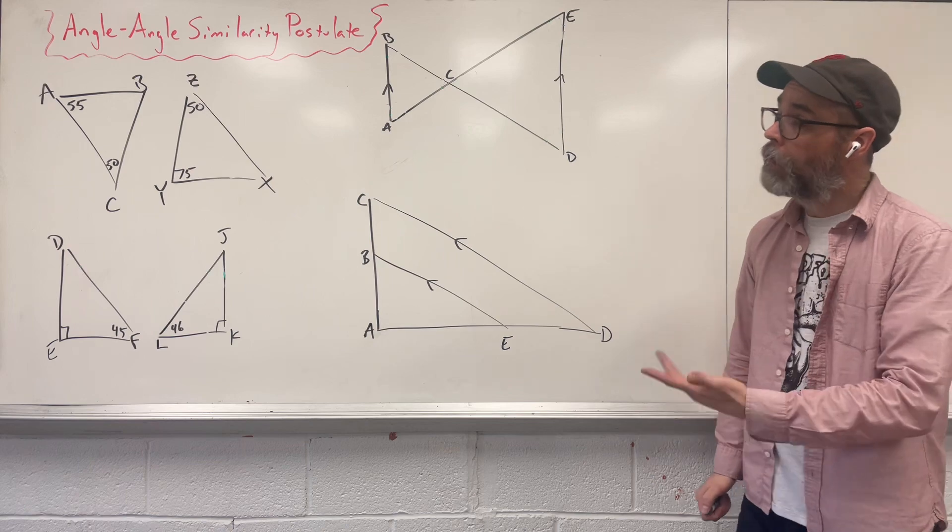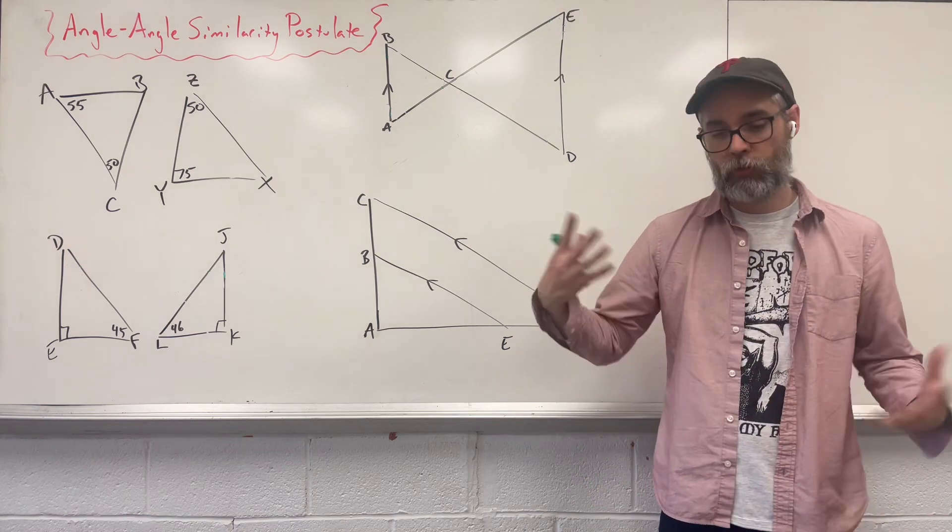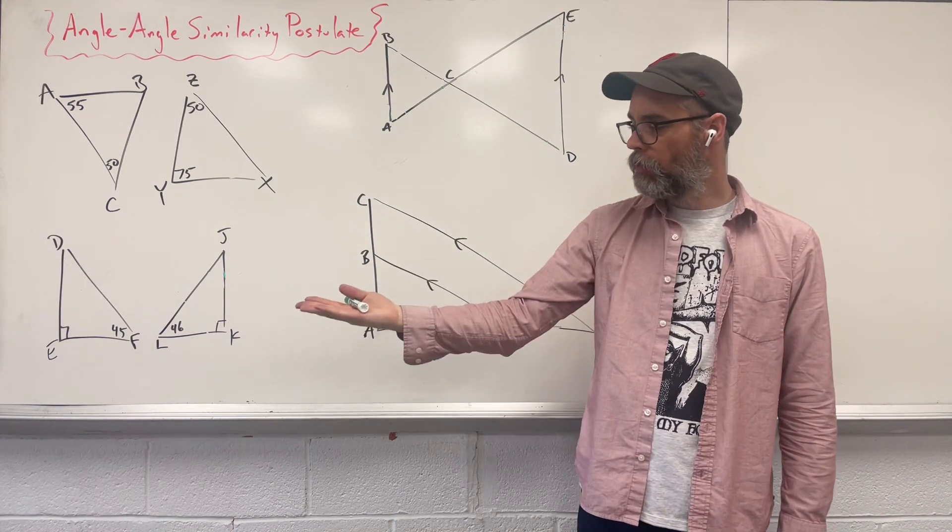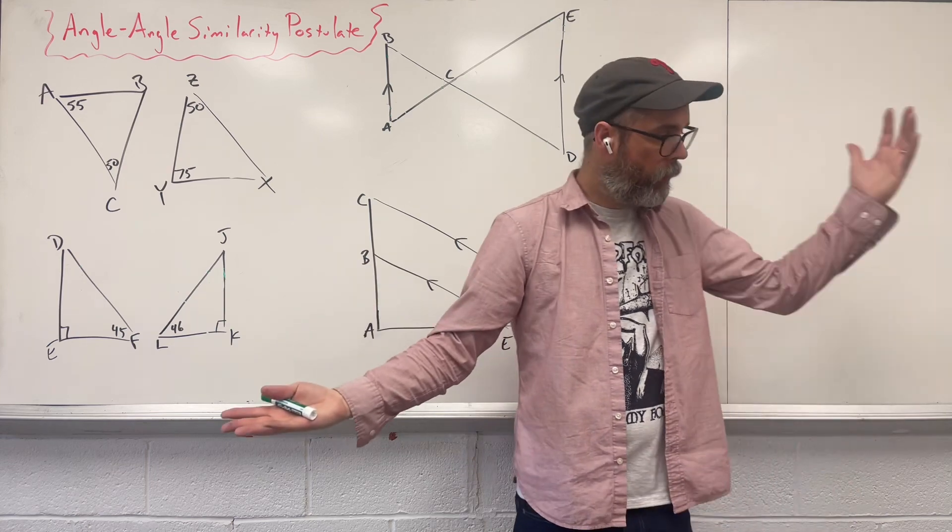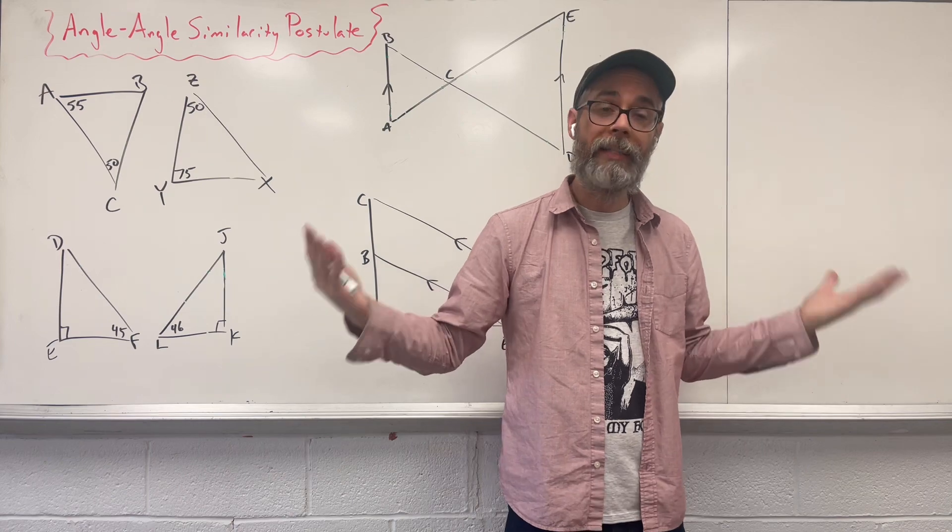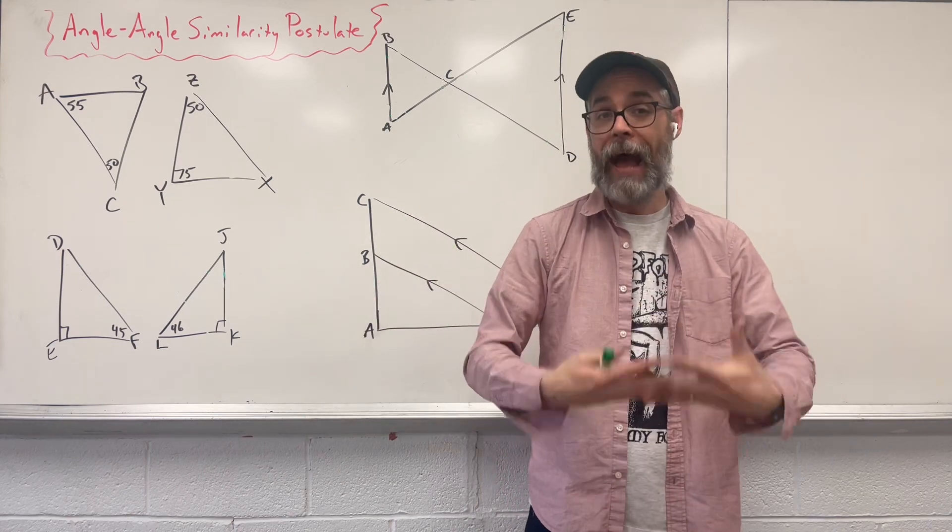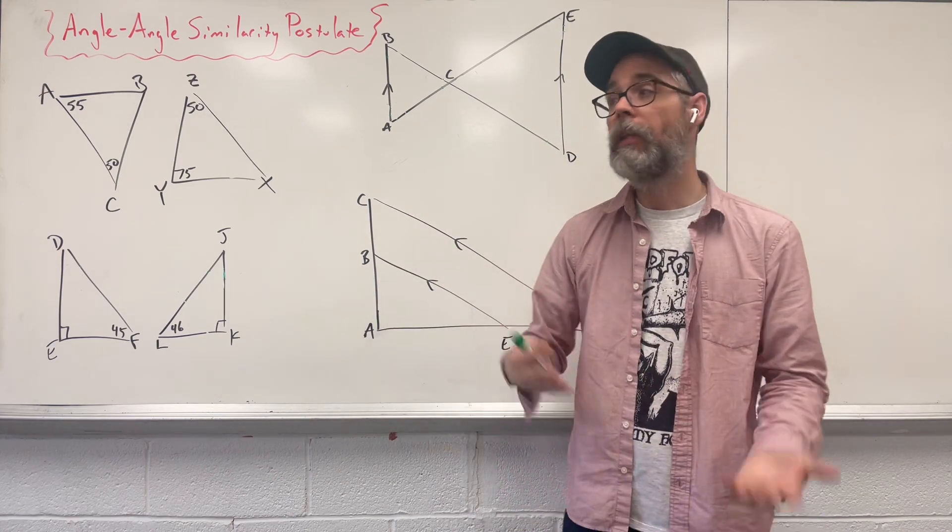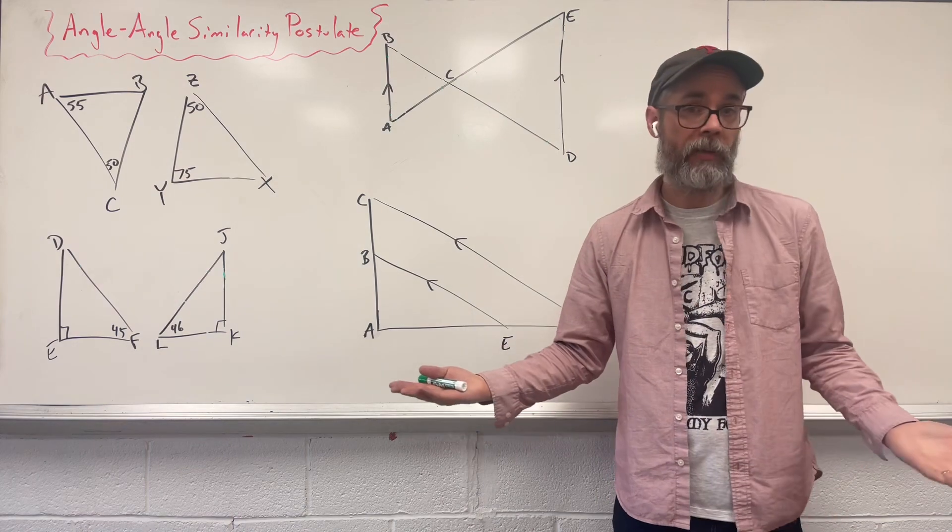The angle-angle similarity rule here says if I have two triangles of different sizes, this triangle has two angles and this triangle has two of the same angles, by definition both of those things have to be similar, leaving the third angle to match up with each other.